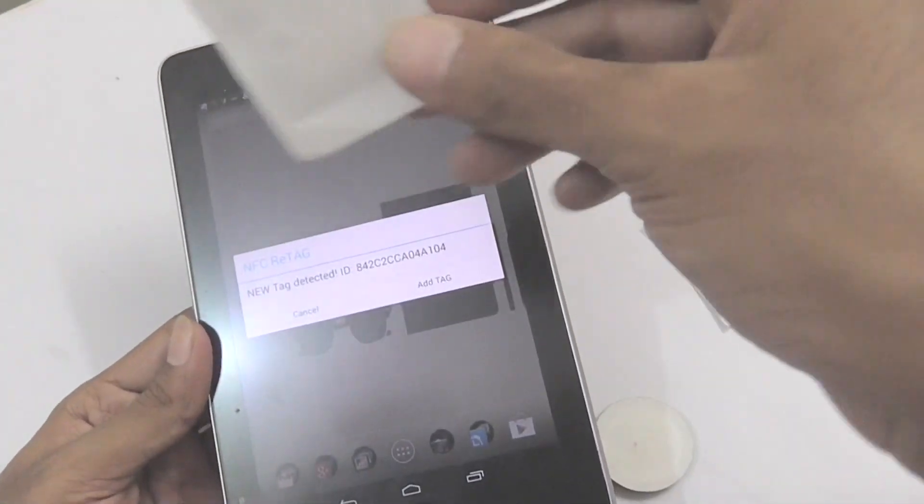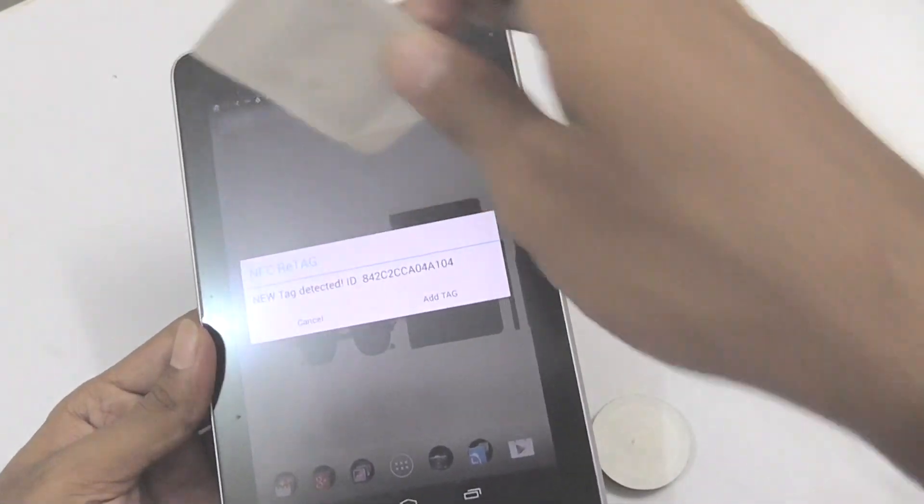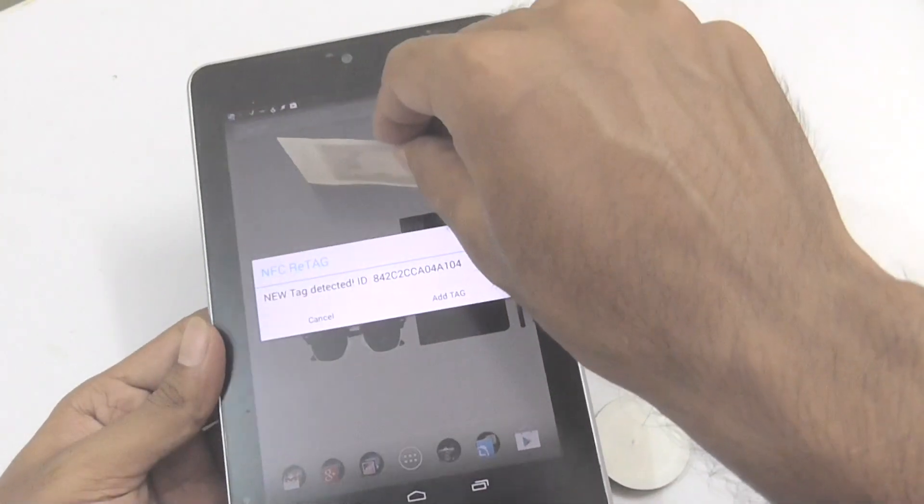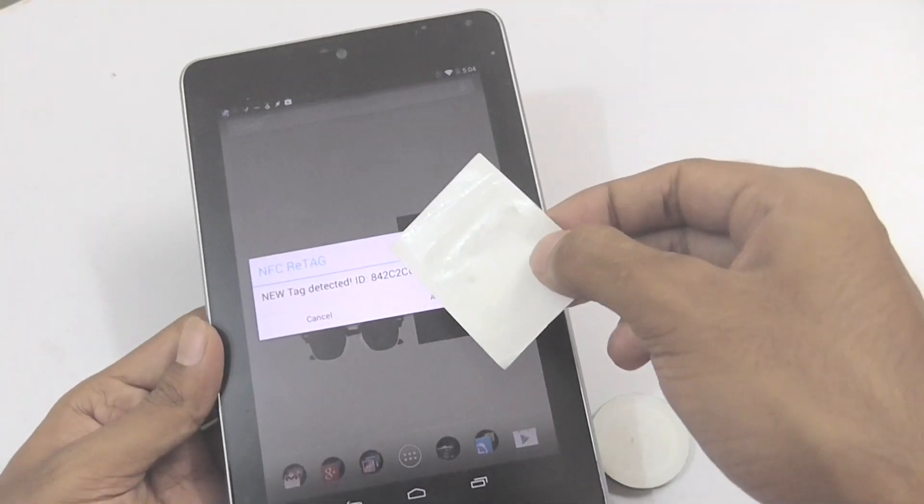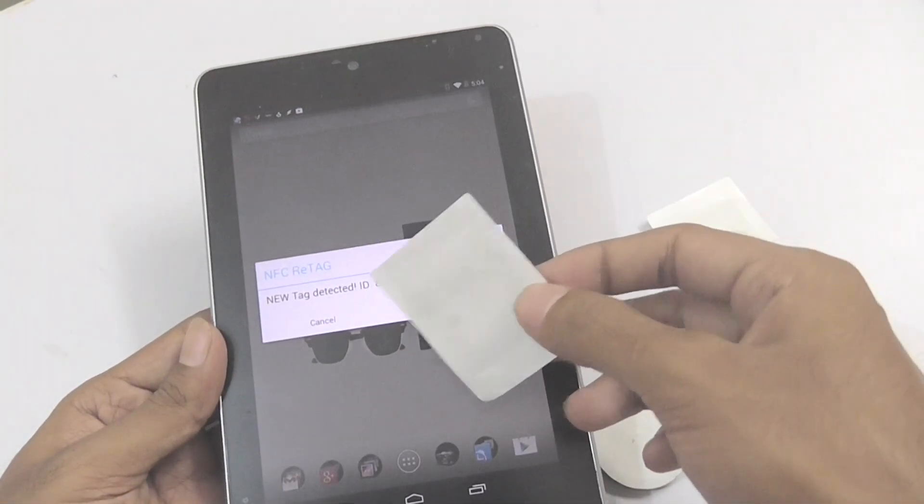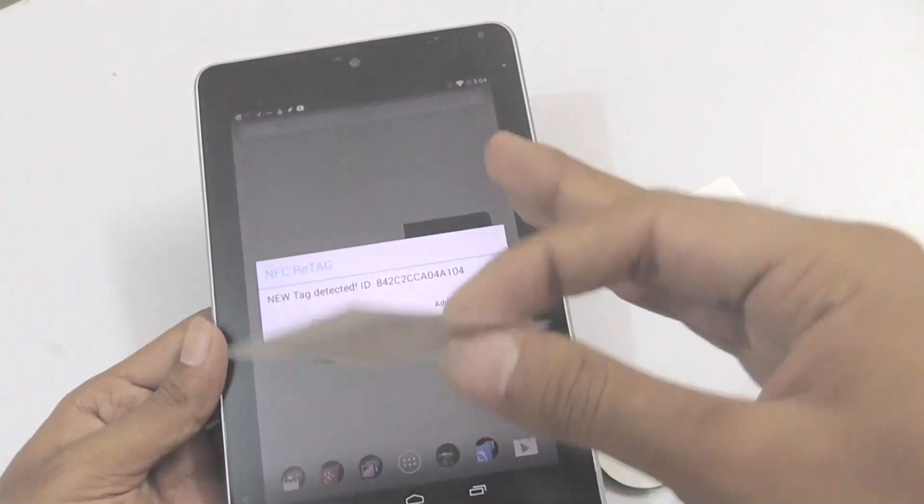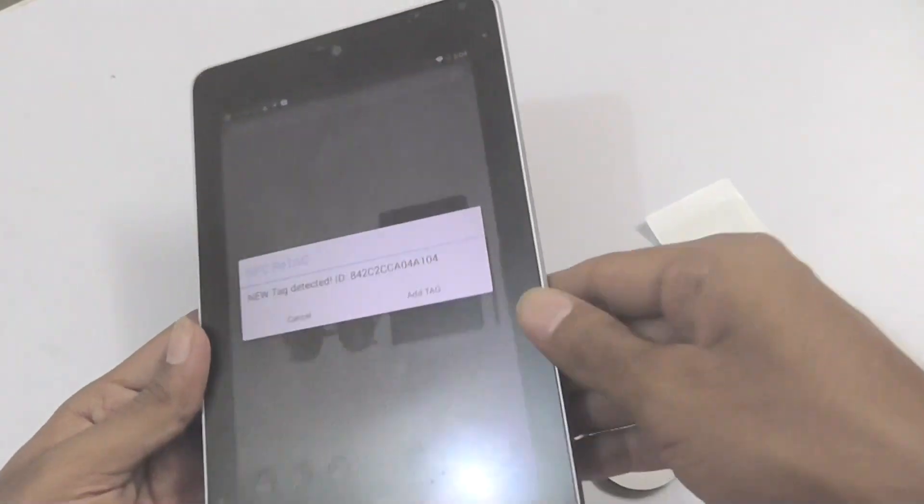Now, whenever this NFC tag comes inside the magnetic field of this device, the information stored in it is sent directly to the device. Practically, it says that the distance is 10 cm, but I have found that it won't work more than 4 cm. And the speed varies from 100 to 400 kbps.